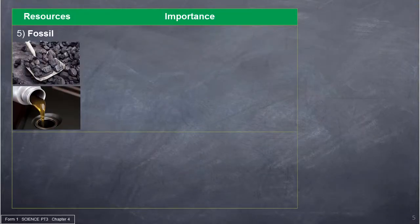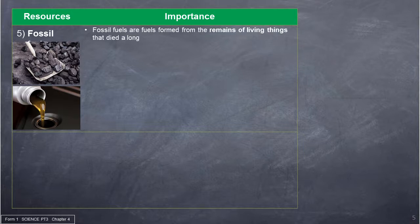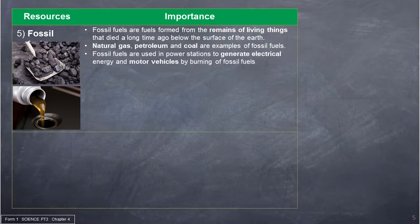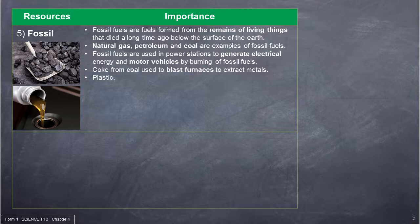Fossil fuels are fuels formed from the remains of living things that died a long time ago below the surface of the earth. Natural gas, petroleum and coal are examples of fossil fuels. Fossil fuels are used in power stations to generate electrical energy and in motor vehicles. Coke from coal is used in blast furnaces to extract metals. Plastic, ammonia, sulfur and wax are some useful products processed from fossil fuels.